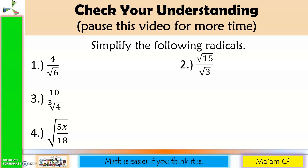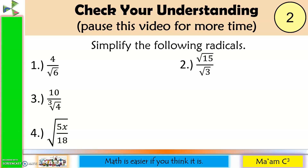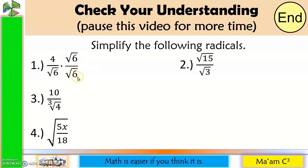Let us answer number 1. We multiply both numerator and denominator by the square root of 6. We get 4 times the square root of 6 in the numerator and 6 in the denominator. Since 4 and 6 are both divisible by 2, we simplify: 4 ÷ 2 = 2 and 6 ÷ 2 = 3. Final answer: 2 square root of 6 over 3.